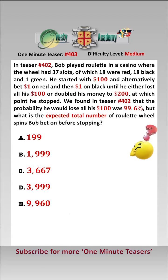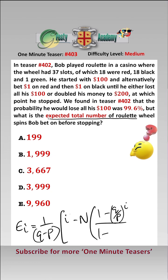To find the expected total number of roulette wheel spins, we're going to use the formula E_I equals 1 over (Q minus P) times I minus N times (1 minus (Q/P)^I) over (1 minus (Q/P)^N). It looks a little bit hairy, but this part here is actually the probability that Bob wins, which we saw in the previous teaser.